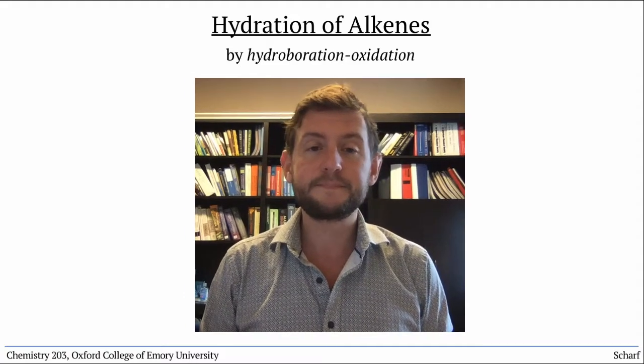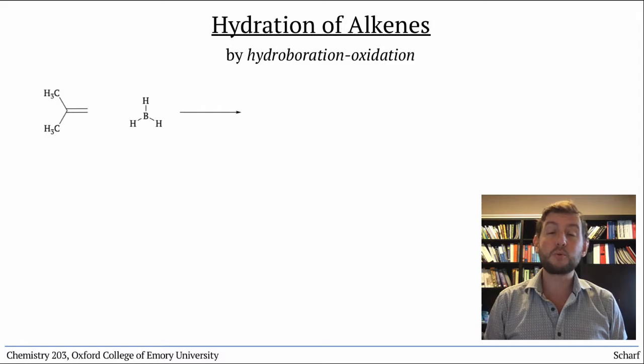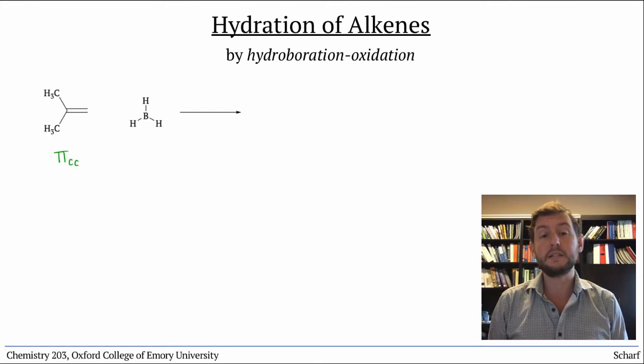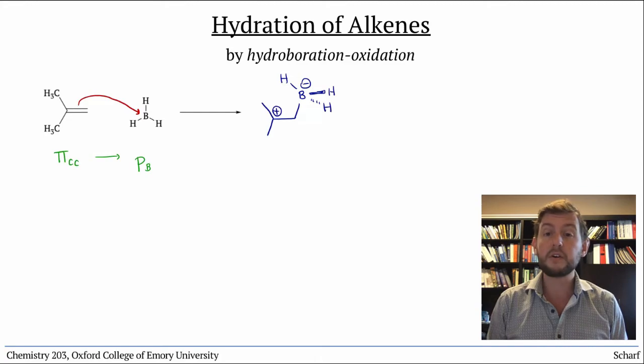Let's see how it works. When an alkene reacts with borane, BH3, we would predict that the HOMO of the alkene, πCC, would donate into the LUMO of borane, an empty P orbital on boron. As we've seen before, this would leave a carbocation at the more substituted site. Okay, so far so good.